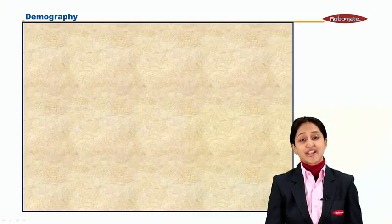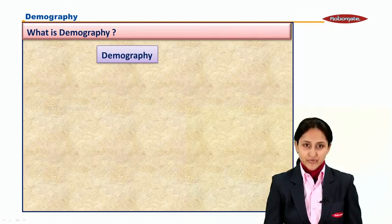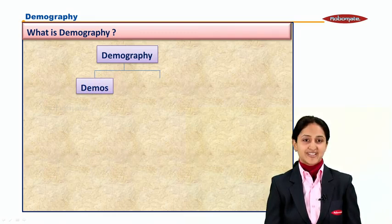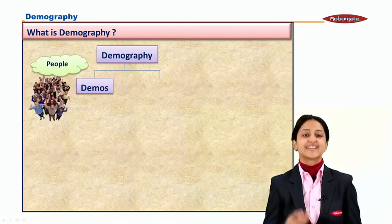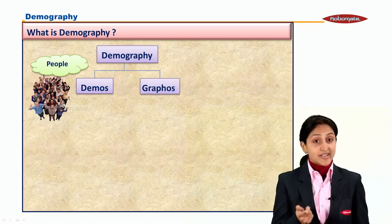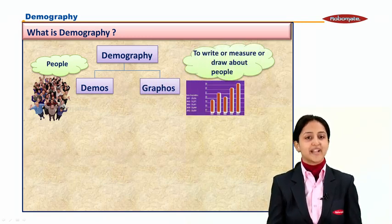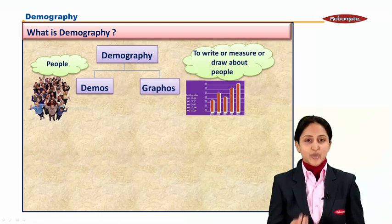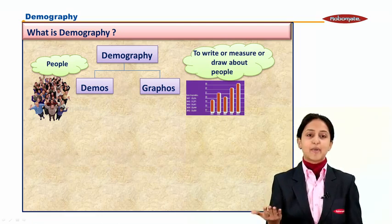We would first be very much interested to know what does demography mean. Demography comes from two Greek words. The first word is demos, meaning people. The next word is graphos, meaning to measure, to draw, or to write something about people. So demography means to write or to measure something about people.